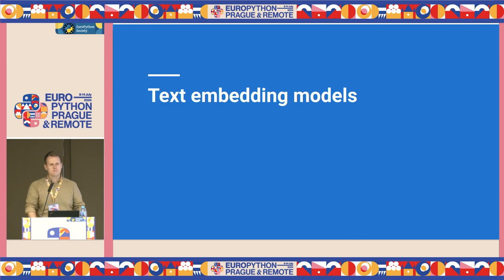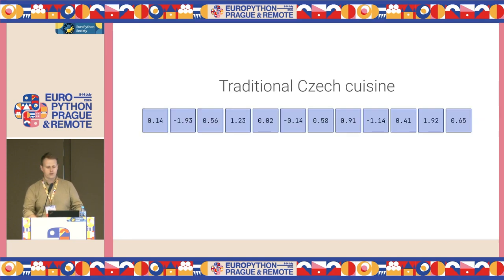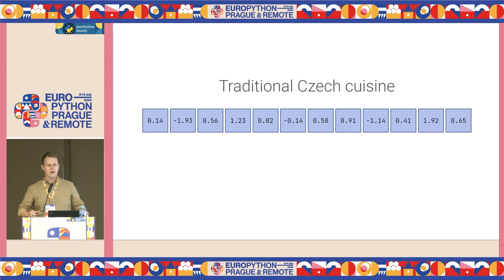A regular user rarely cares about how their embeddings are created. However, this is quite useful if you care about quality, because if you don't understand the process, you can never really improve it. Generally speaking, the idea behind embedding models is that given a specific text, it will produce a single vector.